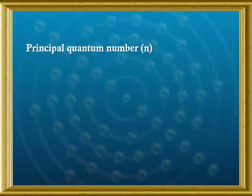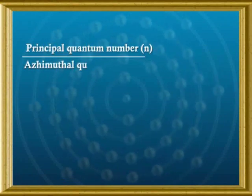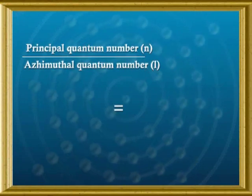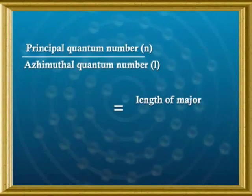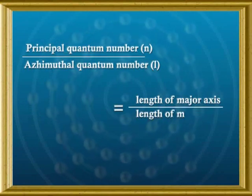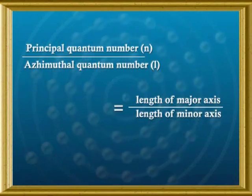K is proposed by Sommerfeld and is called the azimuthal quantum number. The relation between the principal quantum number n and azimuthal quantum number k can be stated as: principal quantum number n divided by azimuthal quantum number k is equal to the length of the major axis divided by the length of the minor axis.